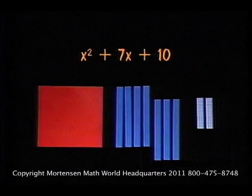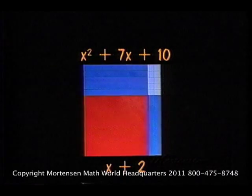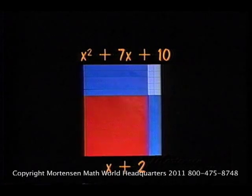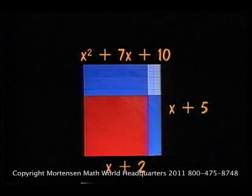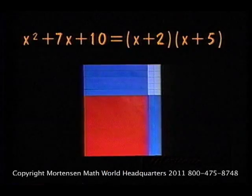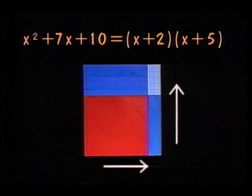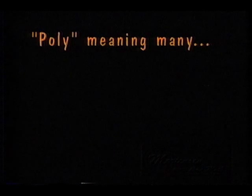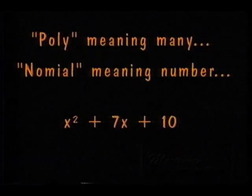Now let's find the factors of these rectangles. X-square, 7X, and 10. We see that the over distance is X and two units, and the up distance is X and five units. These are descriptions of the same rectangle described two different ways. In algebra, this would be written as X-square plus 7X plus 10 equals X plus 2, X plus 5. You have just completed the factoring of a polynomial, poly meaning many, nominal meaning number. X-square plus 7X plus 10 is a many numbered expression, a polynomial.